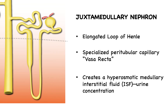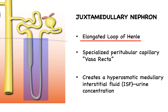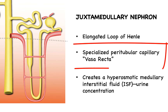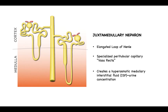The hyperosmotic medullary ISF is important for urine concentration at a time when water conservation is at a premium. Two distinguishing structural features of juxtamedullary nephrons contribute to this role. First, they have an elongated loop of Henle that extends down into the renal medulla, augmenting the nephron's ability to participate in countercurrent multiplication — the process important for creating that hyperosmotic medullary interstitial fluid. They also have specialized peritubular capillaries termed vasa recta, where countercurrent exchange occurs to preserve the hyperosmotic interstitial fluid.